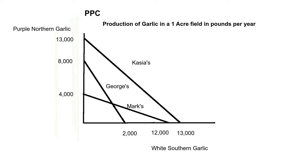Free trade is a very controversial issue, so we're not going to be talking about the politics of trading with the world. Instead, we're going to be talking about trading between different states. We have here a PPC — that's a production possibility curve, also called a production possibility frontier. It shows using all resources efficiently: what is the maximum you can actually produce given those resources?